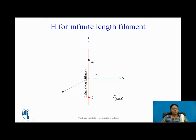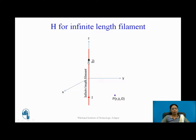Let us assume a small section of the filament having length dL-bar. Because the filament is of infinite length, I cannot find H-bar instantaneously. Instead, I need to find the small dH-bar — the magnetic field intensity for this small section — and then integrate over all sections to get H-bar for the infinite length filament.